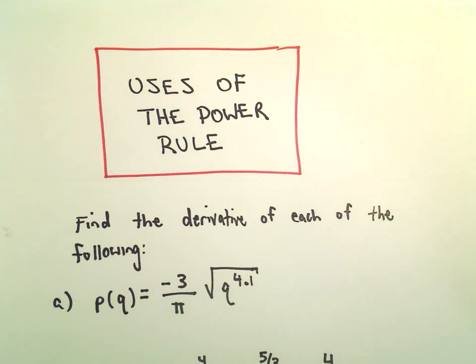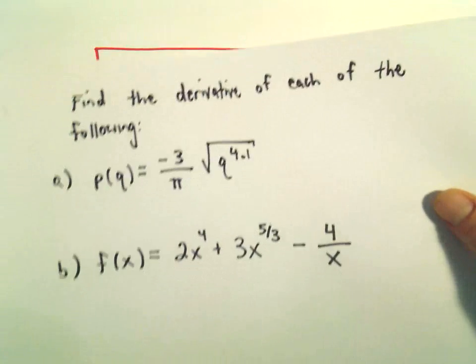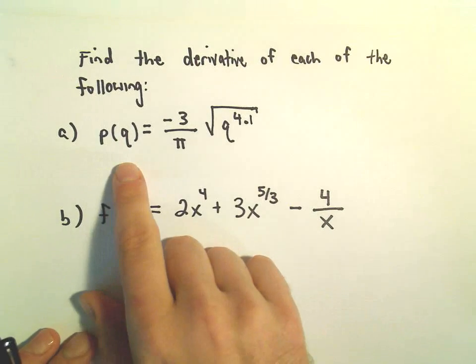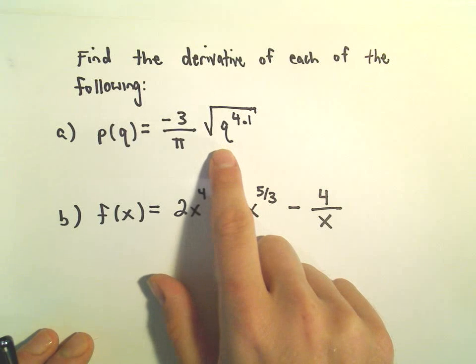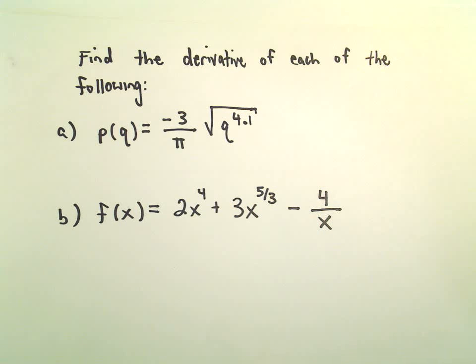Okay, in this video, we're just going to do some more derivatives involving the power rule. So in part A here, we've got P of Q equals negative 3 over pi times the square root of Q to the 4.1 power.